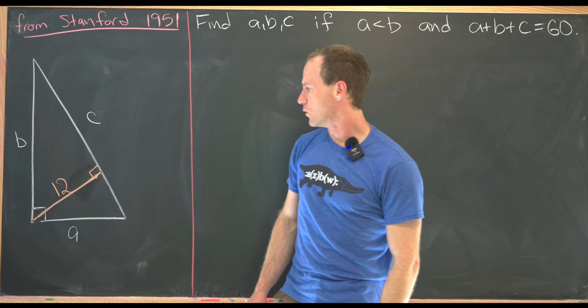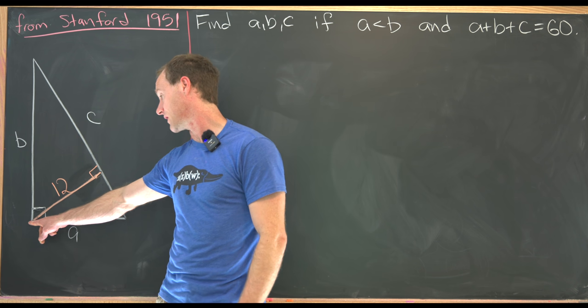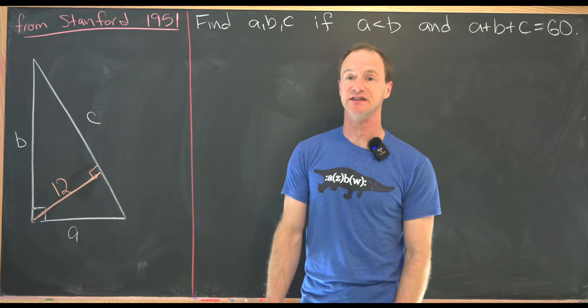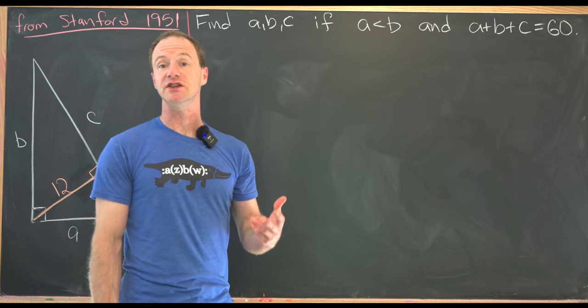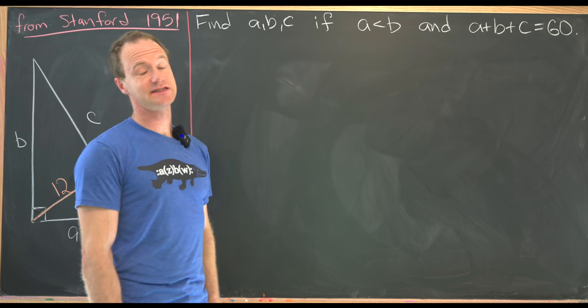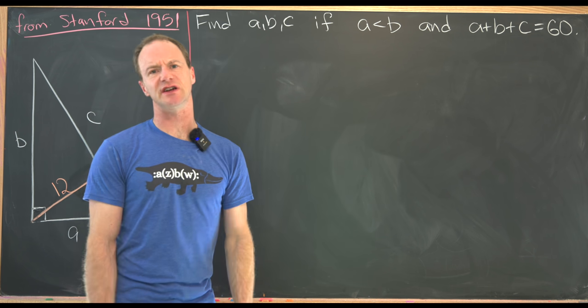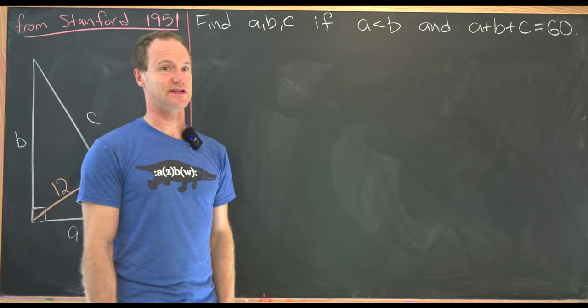Furthermore, we know that the altitude from this right angle right here, this right angle vertex to the hypotenuse, is 12 units. And using this data, we want to find A, B, and C if A is less than B. There's a symmetric solution if A is bigger than B. I'll let you guys get that one on your own.